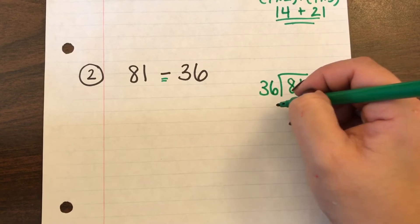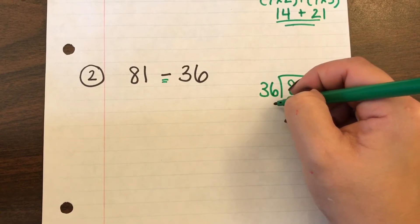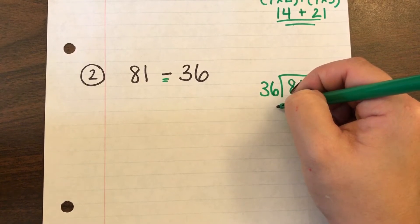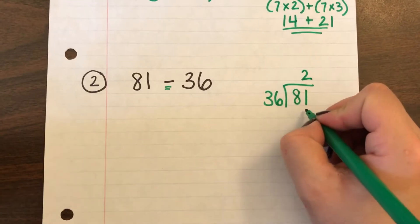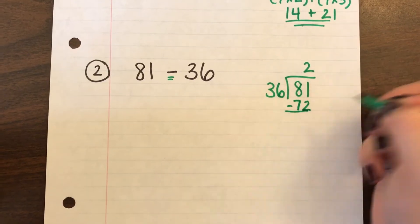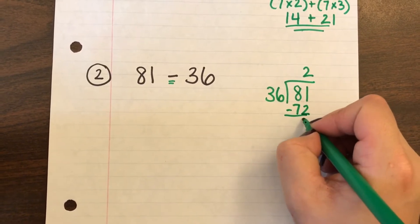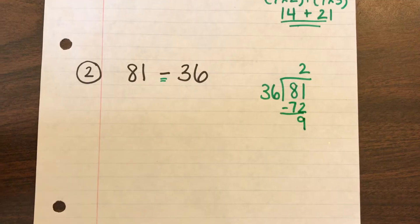Okay so 81 divided by 36 will give me two times it can go through. Which gives me 72 with 9 left over.